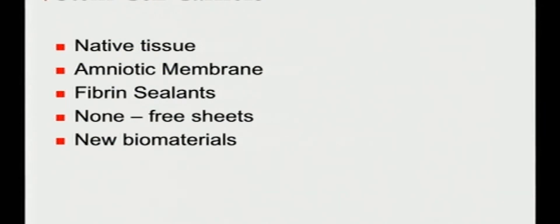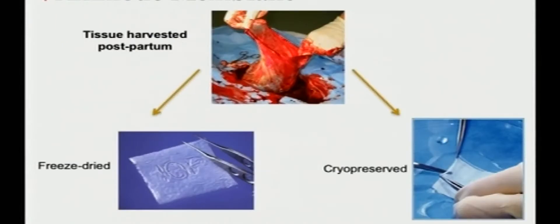But one thing I like to focus on is the carriers. How do we move the stem cells from the dish or even when we're doing SLET procedures how do we provide them with a suitable substrate on which to grow and thrive. Native tissue is certainly used in SLET and also the conjunctival limbal grafts but amniotic membrane of course, fibrin sealants have been used, freeze sheets and of course new biomaterials.